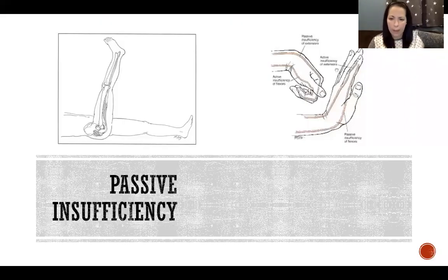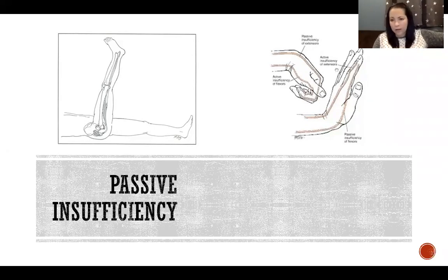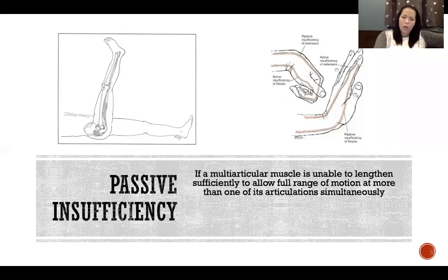Passive insufficiency happens passively. Passive insufficiency is about allowing for full range of motion — it's where we're restricting range of motion at one joint because of the position of another joint that that multi-articular muscle crosses. Active insufficiency is about when we're actively producing force and what is the effect of that force or lack thereof, while passive insufficiency is when we're trying to move through full range of motion and what is the effect of the multi-articular muscles on our range of motion in a passive direction.